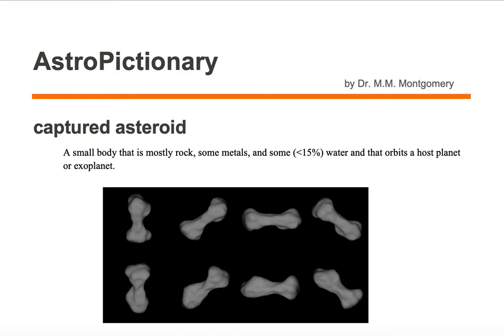A captured asteroid is a small body that is mostly rock, some metals, and some less than 15 percent water, and that orbits a host planet or exoplanet.